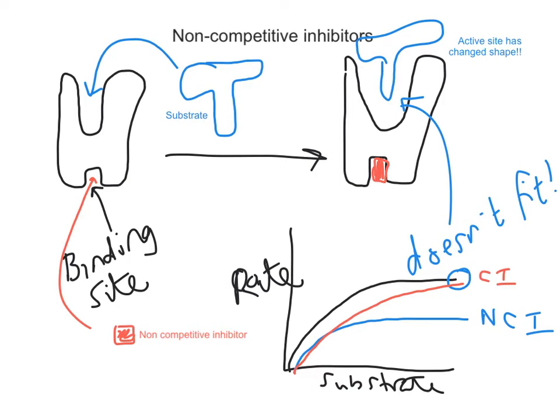It's really important to remember — I was using the term 'denatured' to help you understand the consequences for the active site — but it's important to know that non-competitive inhibitors are not necessarily denaturing the enzyme. Sometimes the binding to this binding site is irreversible, and in that case you could argue it has been denatured, because once an enzyme is denatured it can no longer work.